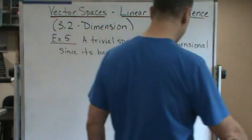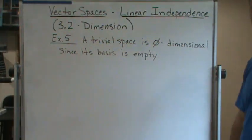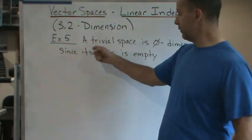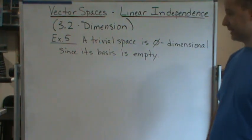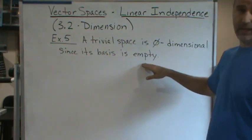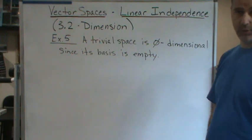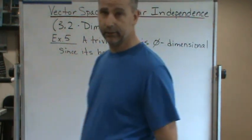Okay, here's another example. Straightforward, pretty obvious from our previous discussions. A trivial space is a zero-dimensional space since it has a basis that is empty. So zero-dimensional. So that is a thing.